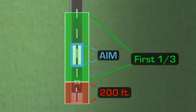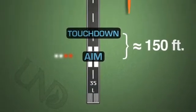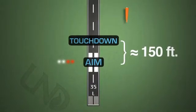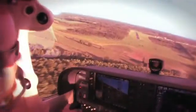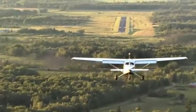The touchdown point will generally be 150 to 200 feet beyond the aiming point; however, the exact distance will vary with winds, aircraft performance, and pilot technique. If not confident of being able to accomplish the landing in the available runway using these aiming points, then the pilot should choose a different type of landing or possibly a more suitable runway.